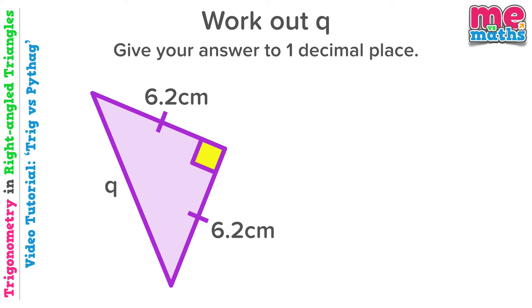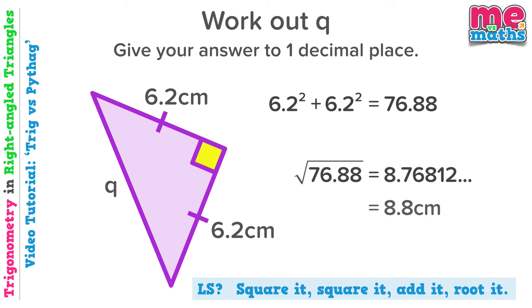We're looking for the longest side this time, so we'll square both sides, add them, and root it. So square our 6.2's and add them together, square root that answer and round it off.